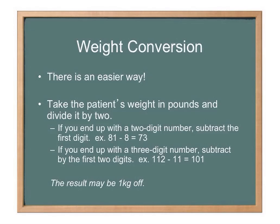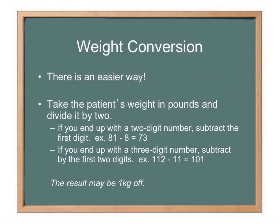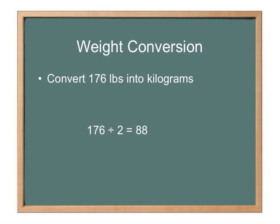If you end up with a three-digit result, here's another example: 200 divided by 2 equals 100. With a three-digit result, subtract the first two digits — 100 minus 10 equals 90. So 200 pounds is about 90 kilograms. Another example: 176 pounds divided by 2 equals 88. Subtract the first digit — 88 minus 8 equals 80 kilograms. So 176 pounds equals 80 kilograms.